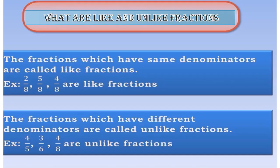In this lesson you have already learned what are like fractions and unlike fractions. Like fractions have the same denominator — see here, in this example you can see 8, 8, 8: all are the same denominators, so these are called like fractions. Fractions which have different denominators are called unlike fractions.